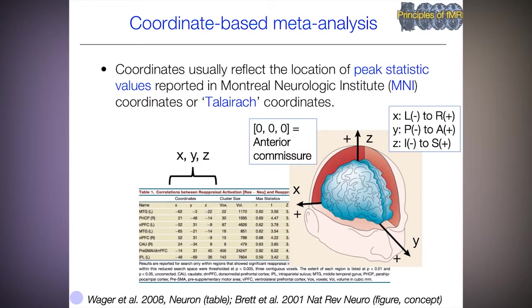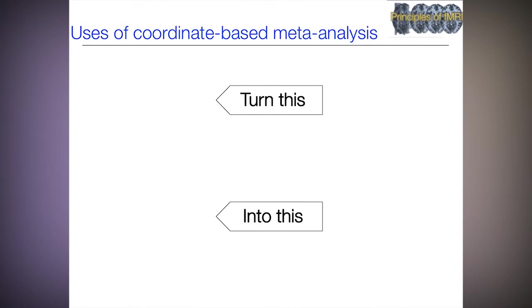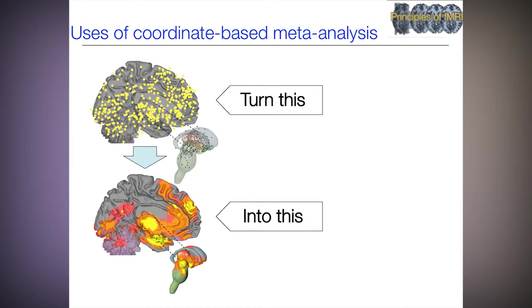We can take all these reported coordinates and put them into a series of studies. Coordinate-based meta-analyses turn this collection of coordinates across the brain into a picture of where the consistent findings are and where there's a significant density of reported coordinates that exceeds what you'd expect by chance.